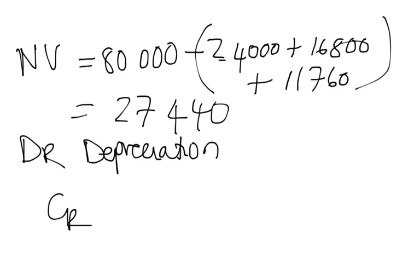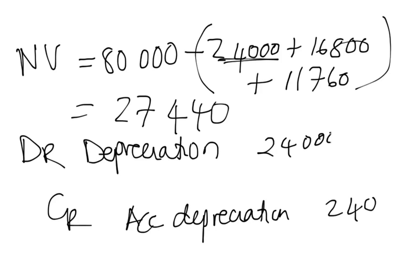If we take year one, for example, we debit depreciation with $24,000 and credit accumulated depreciation with $24,000. And that's it.